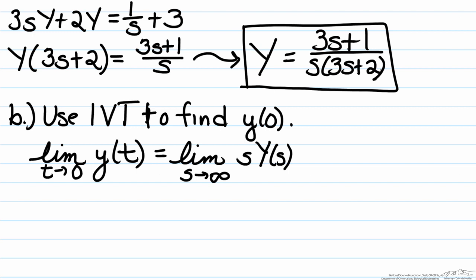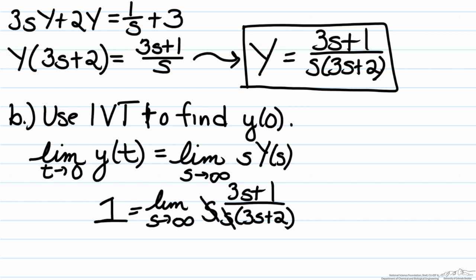On the left hand side, as t goes to zero we know what y of zero is — it's one, as given by the initial condition in the problem statement. So now we evaluate the limit as s approaches infinity of s multiplied by our answer for y. The s's will cancel out, so we're left with the limit of 3s plus one over 3s plus two. Here we would have a limit of infinity over infinity, but using L'Hôpital's rule we can see that this limit will approach three over three, which equals one. So therefore this is a check on our development of our Laplace variable for y.